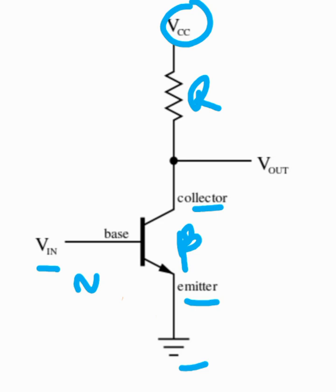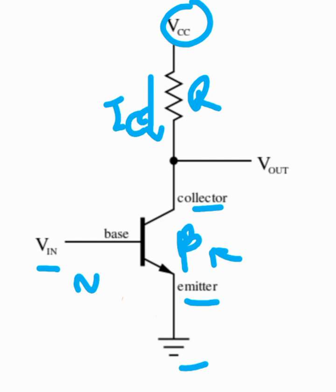There is a factor called beta which defines the gain of the transistor. The input base current IB gets multiplied with this factor beta to produce the collector current IC in the output side of the circuit.